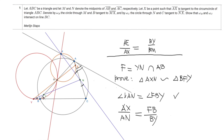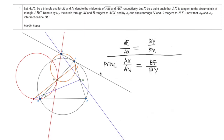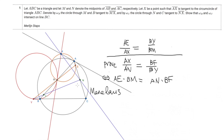If we have this angle equality and this ratio equality, then these two triangles are similar. Looking at the equation we want to prove alongside the one developed previously, they both involve terms AX times BY and AX times BM. So it is sufficient to prove that AE times BM equals AN times BF. To prove this, we apply Menelaus' theorem on line EMY and line NFY. Let's first apply it on line YME.